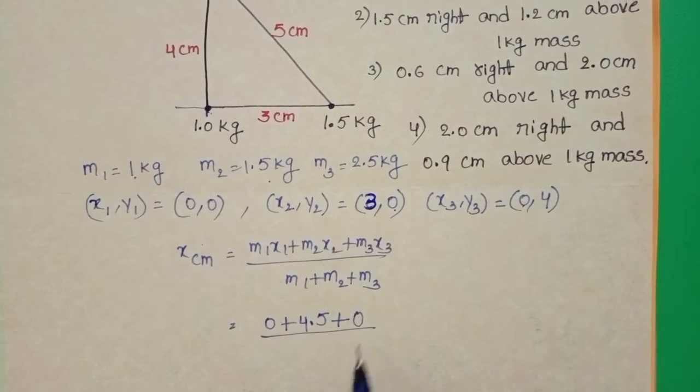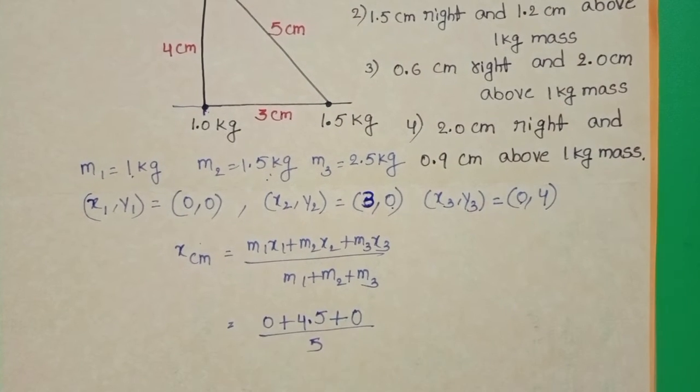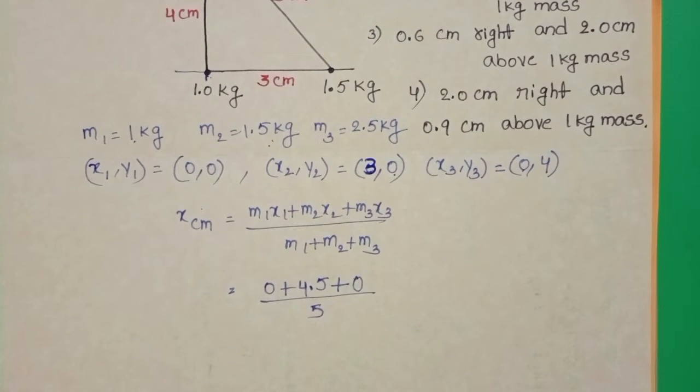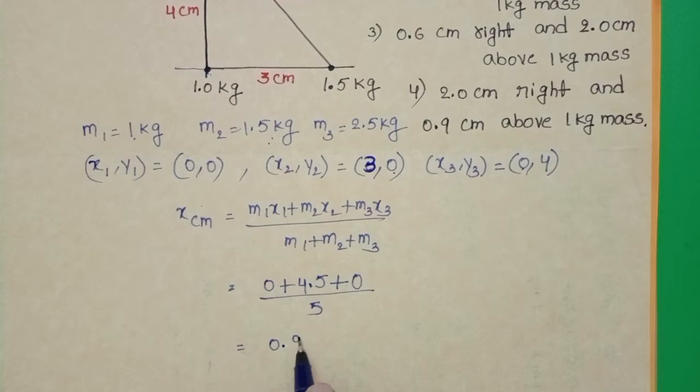Third term is 0 divided by 1 + 1.5 + 2.5, 5 kg. 4.5 by 5 equals 0.9 cm.